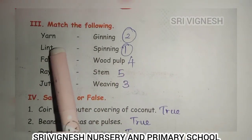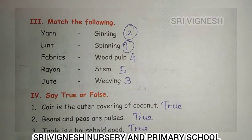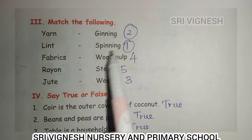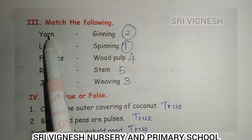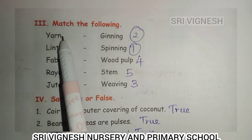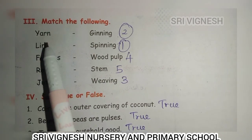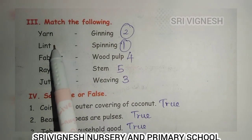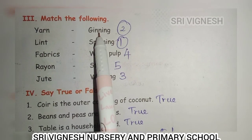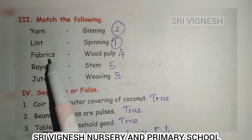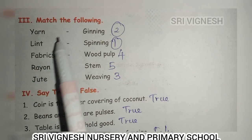Next one, match the following. Yarn — what is the process? Spinning process. Next, lint. Lint properties are related to the ginning process.